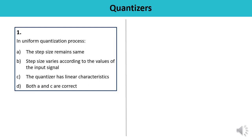Question 1: In uniform quantization process, pick the correct answer. Option A — the step size remains the same — this is correct for uniform quantization. Option B — step size varies according to the value of the input signal — this is wrong. Option C — the quantizer has a linear characteristic — this is also correct. Since A and C are both correct, the answer is D.